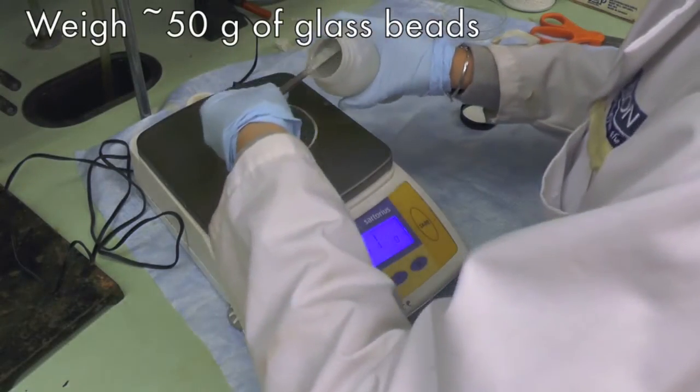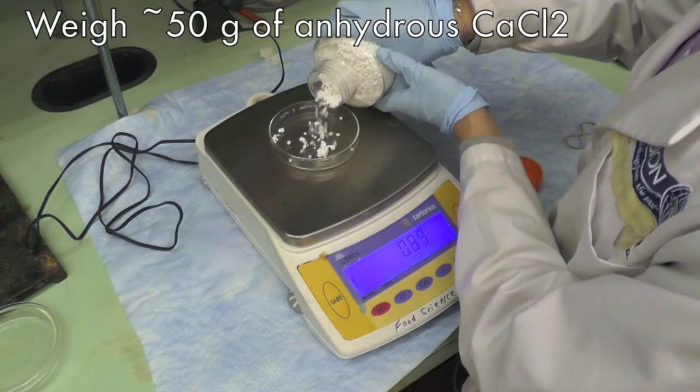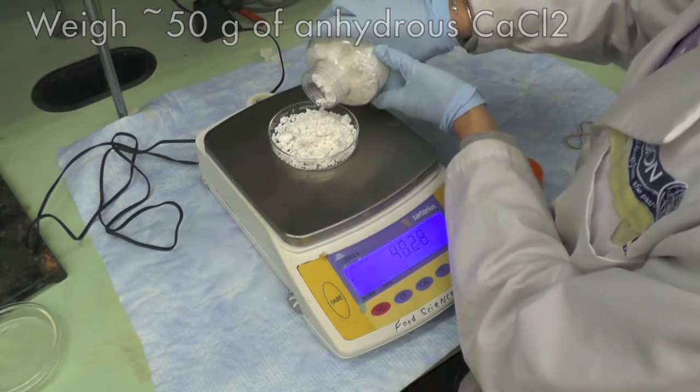Weigh around 50 grams of glass beads into the petri plates serving as the control. Weigh around 50 grams of anhydrous calcium chloride in the rest of the petri plates.